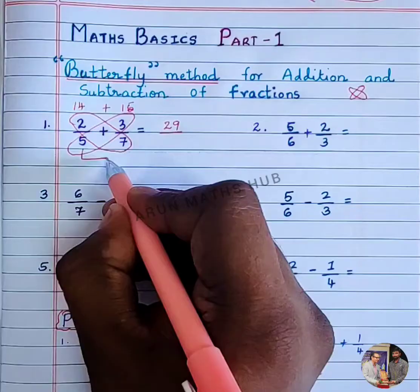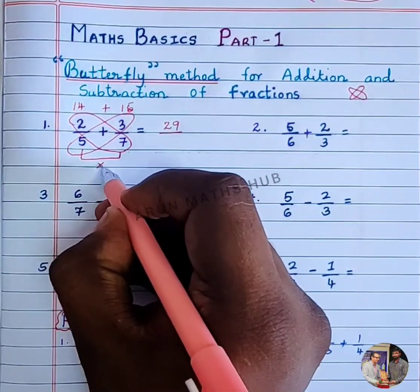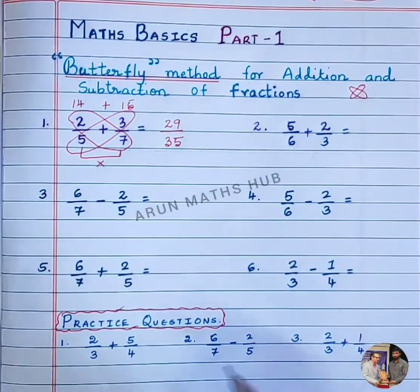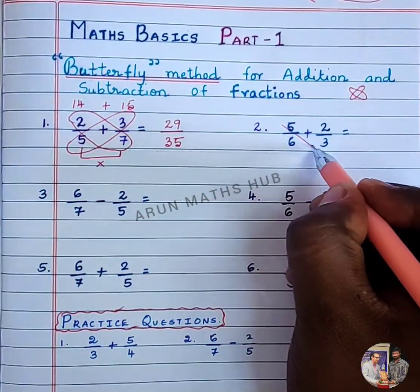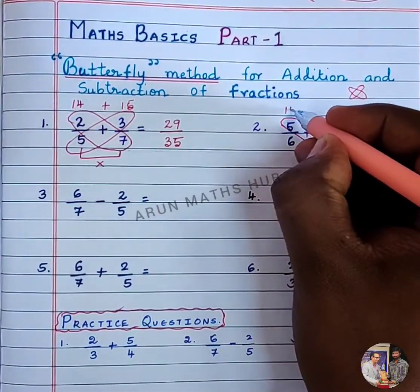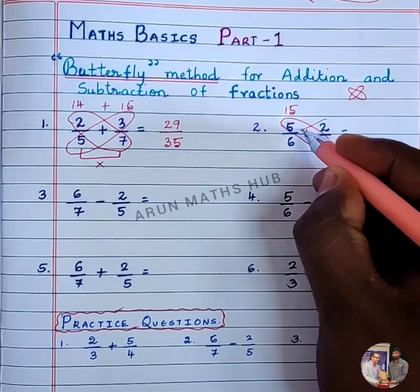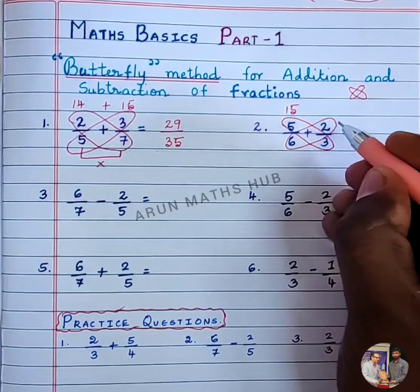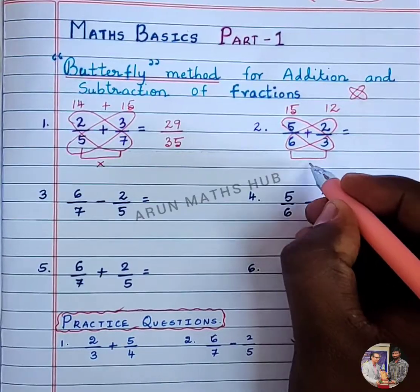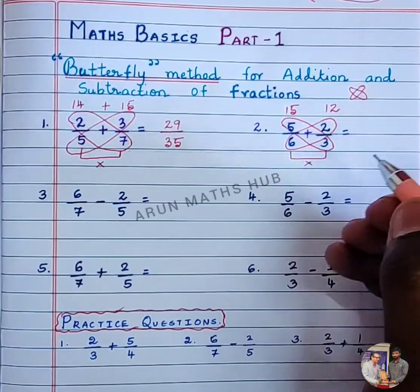The denominator you should multiply: 5 times 7 is 35. One more example: 5 into 3 is 15. Next, 6 into 2, that is 12. What you need to do here is add, and for the denominator